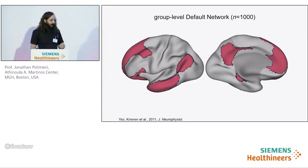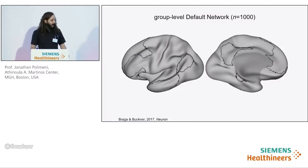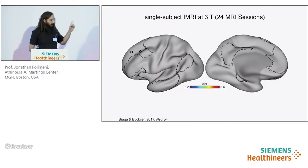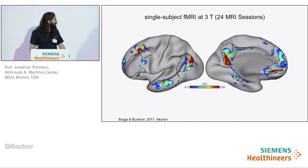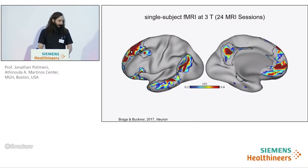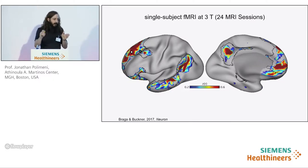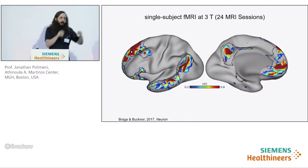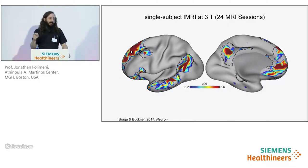Considering the default mode network identified by Randy's group across a thousand subjects, and overlaying data from one individual — with functional connectivity from two different seeds in the lateral prefrontal cortex — from data from one subject averaged across 24 MRI sessions, we see that individual sub-networks appear for each seed, and both sub-networks occupy regions within the default mode network. For each subject, seed placement was optimized to maximize the separation of these two sub-networks, and when seed vertices optimized for one subject were transferred to another subject, the sub-networks disappeared — suggesting group-level analyses would obfuscate this network fractionation seen at the individual subject level.